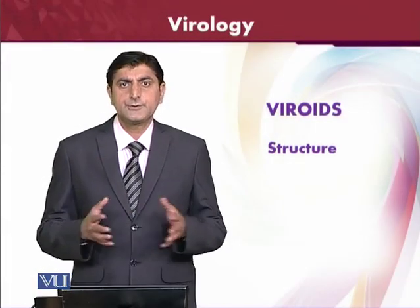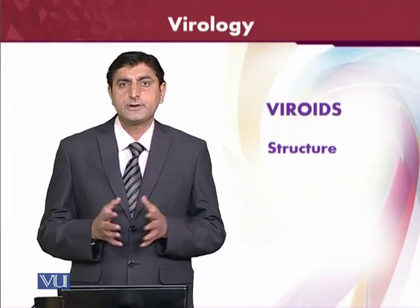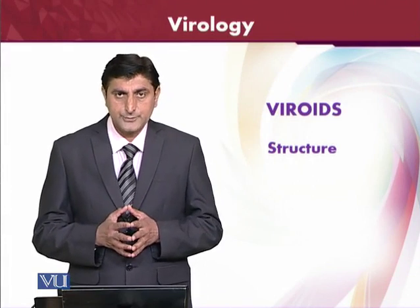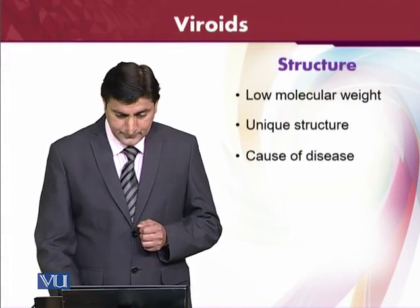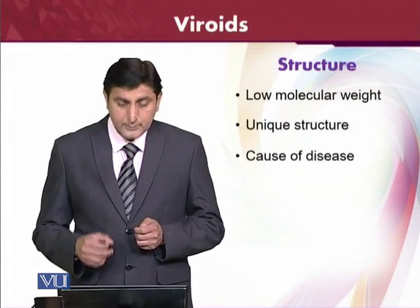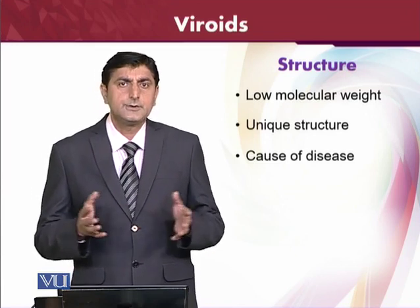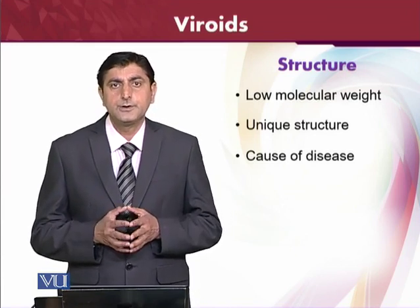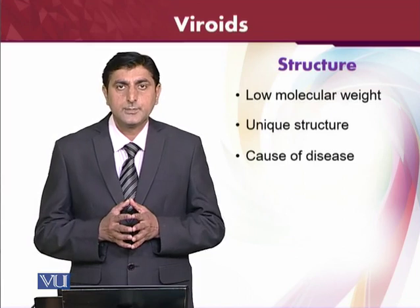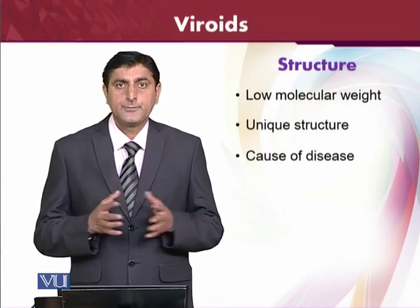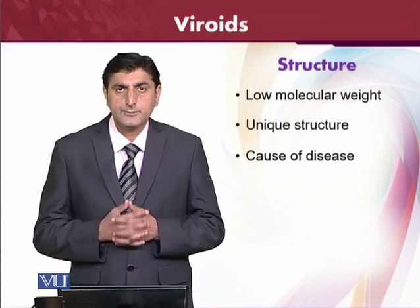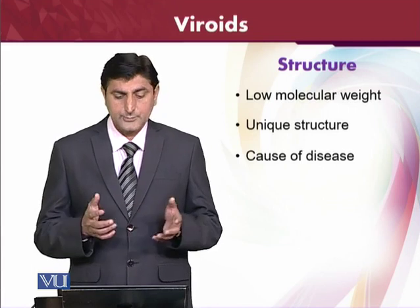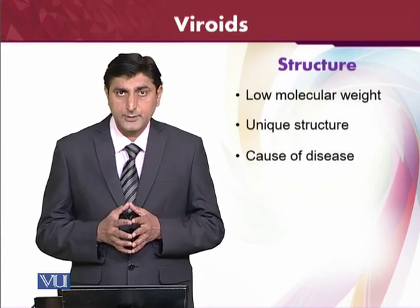Now we will see the different structure of the viroids — the viroids are composed of which kind of structure. First of all, as we have already seen, these are composed of RNA, therefore they will be lower molecular weight structures. Their molecular weight will be very low, and they are a unique structure which is going to cause disease in different plants.